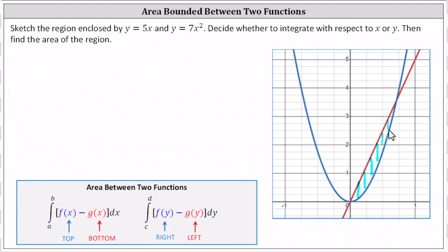The limits of integration will be the x values of the points of intersection. Let's also analyze the area from left to right, or horizontally. Notice the area is always bounded on the right by the parabola and on the left by the line. This indicates we could also determine the bounded area with respect to y. However, in this case, we would have to solve both equations for x to write them as functions of y, and then determine the y values of the points of intersection. Because we'd have to find functions of y to integrate with respect to y, let's integrate with respect to x.